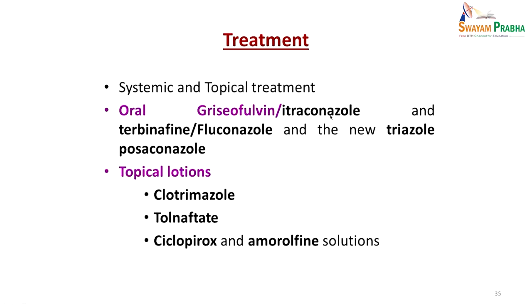Treatment comprises systemic or topical treatment. Oral griseofulvin or itraconazole is given, or you can use terbinafine, fluconazole, voriconazole, or posaconazole — available orally. Topical lotions such as clotrimazole and tolnaftate are used when the disease is not extensive. Many times you need to combine both systemic and topical treatment depending on severity, and treatment can extend up to 6 to 8 months depending on how extensive the lesion is.